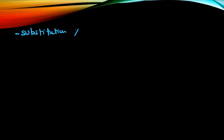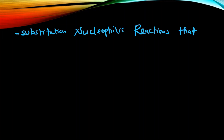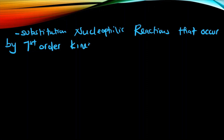The golden question is: what are SN reactions and how do they occur? SN reactions are simply substitution nucleophilic reactions that occur by first-order kinetics. Because of this first-order kinetics, they are denoted as SN1.